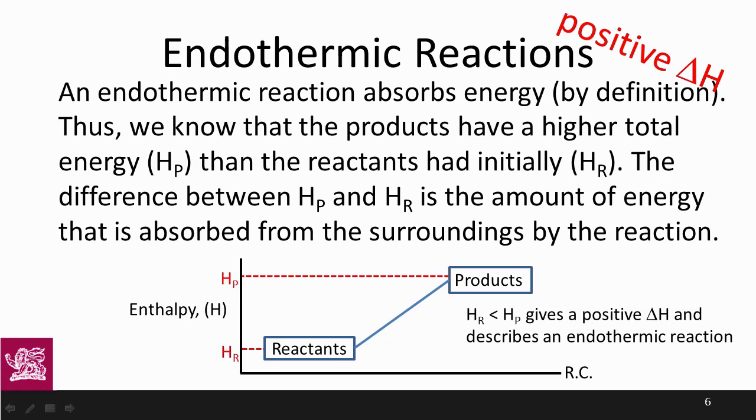By comparison, for an endothermic reaction, we have a positive delta H, and we see an uphill type of process, where the enthalpy of the reactants is less than the enthalpy of the products. For us to push this reaction uphill, we're going to need some energy, as opposed to the exothermic reaction, where as we roll downhill, we release energy.